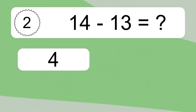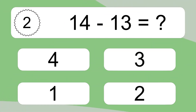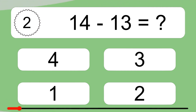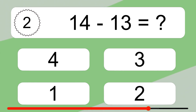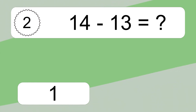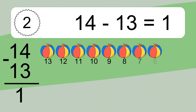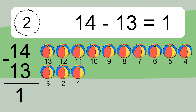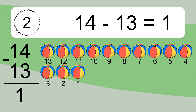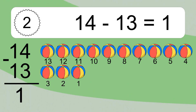14 minus 13 equals what? 14 minus 13 equals 1. Let's count it: 13, 12, 11, 10, 9, 8, 7, 6, 5, 4, 3, 2, 1.